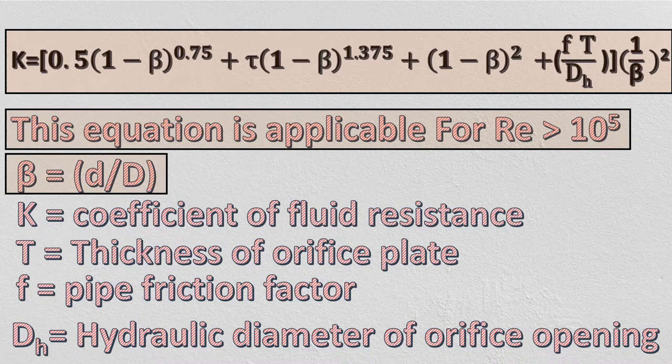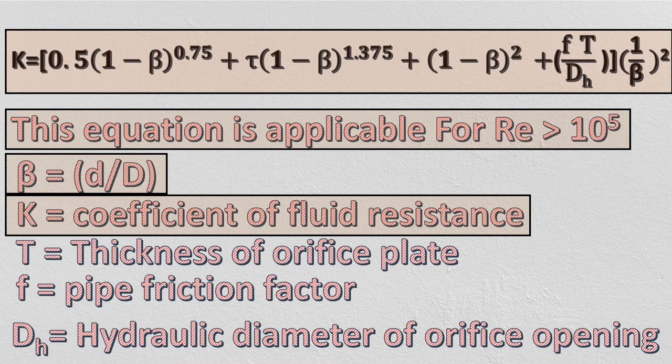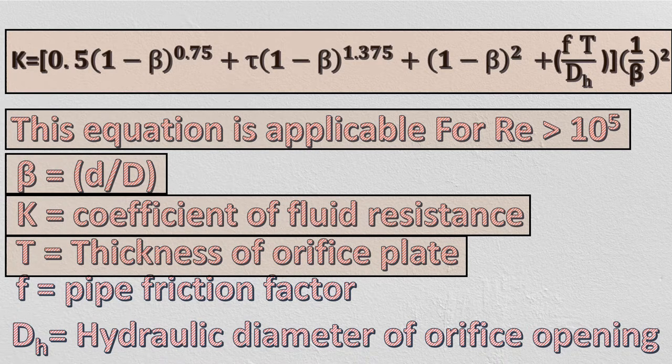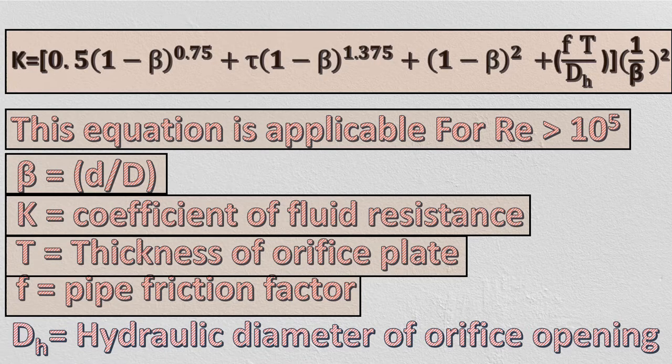Where symbol β is the ratio of orifice diameter to the pipe diameter, K is coefficient of fluid resistance, T is the thickness of orifice plate, F is the pipe friction factor. You can click on the i button where I have shown step-by-step procedure to calculate friction factor for pipe.